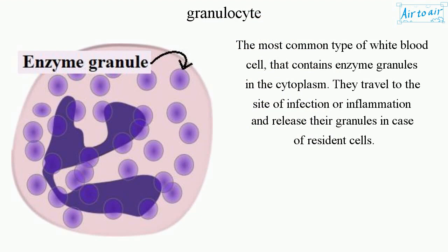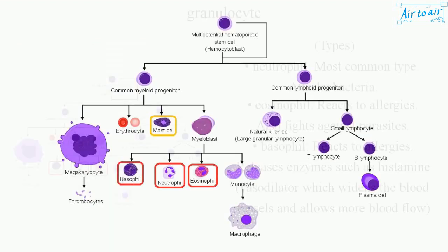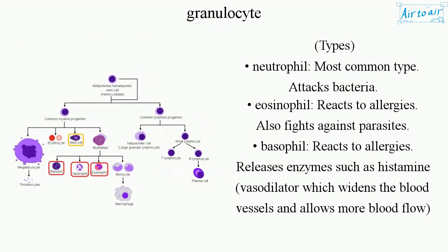They travel to the site of infection or inflammation and release their granules. Types: Neutrophil — the most common type — attacks bacteria.